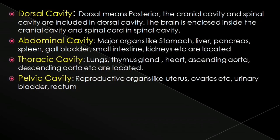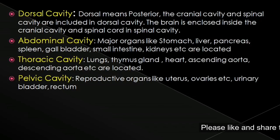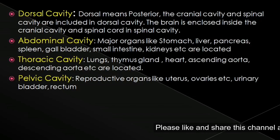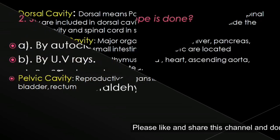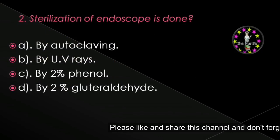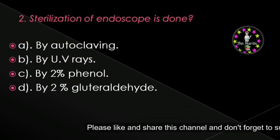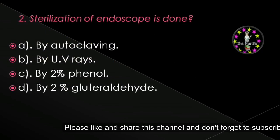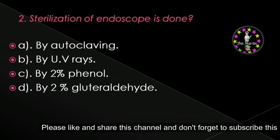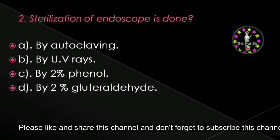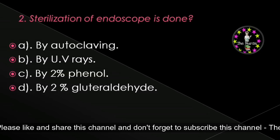In thoracic cavity, lungs, thymus gland, heart, ascending aorta, descending aorta, etc. are located. In pelvic cavity, reproductive organs like uterus, ovaries, urinary bladder, rectum, etc. are included.